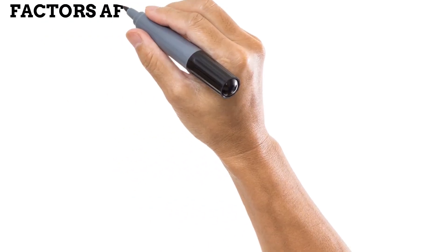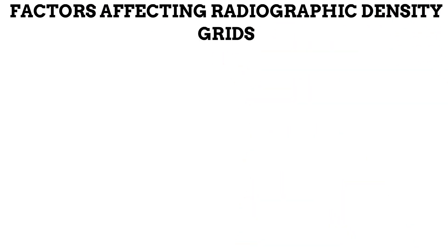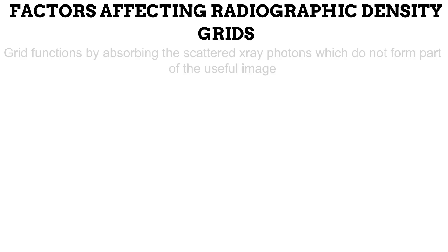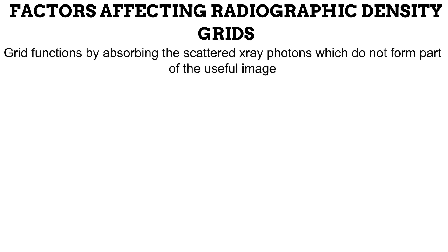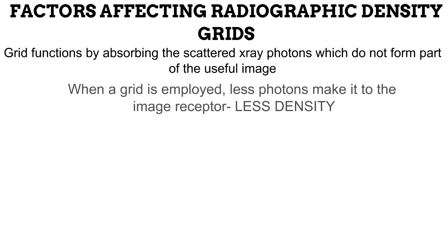Next, we have the use of secondary radiation grids. Scattered radiation is problematic because it does not represent the anatomy being examined. The secondary radiation grid removes scattered X-ray photons; thus, when a grid is used, it absorbs photons, producing a lower density compared to when a grid is not used.